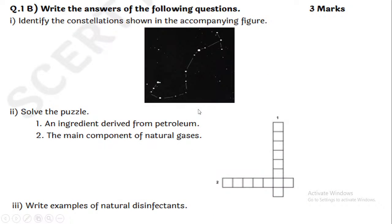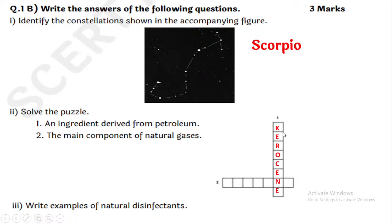Next, identify the constellation. This is the Scorpio constellation — it is called Vichik in Marathi. An ingredient derived from petroleum: this is kerosene.